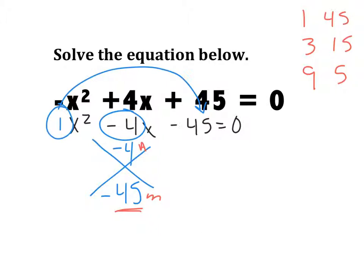So, now I have to figure out what signs do I give them. Because I'm actually adding these two numbers together. I'm going to make this a negative 9 and a positive 5. Negative 9 plus 5 gives me a negative 4. Negative 9 times 5 is negative 45. So, that works.